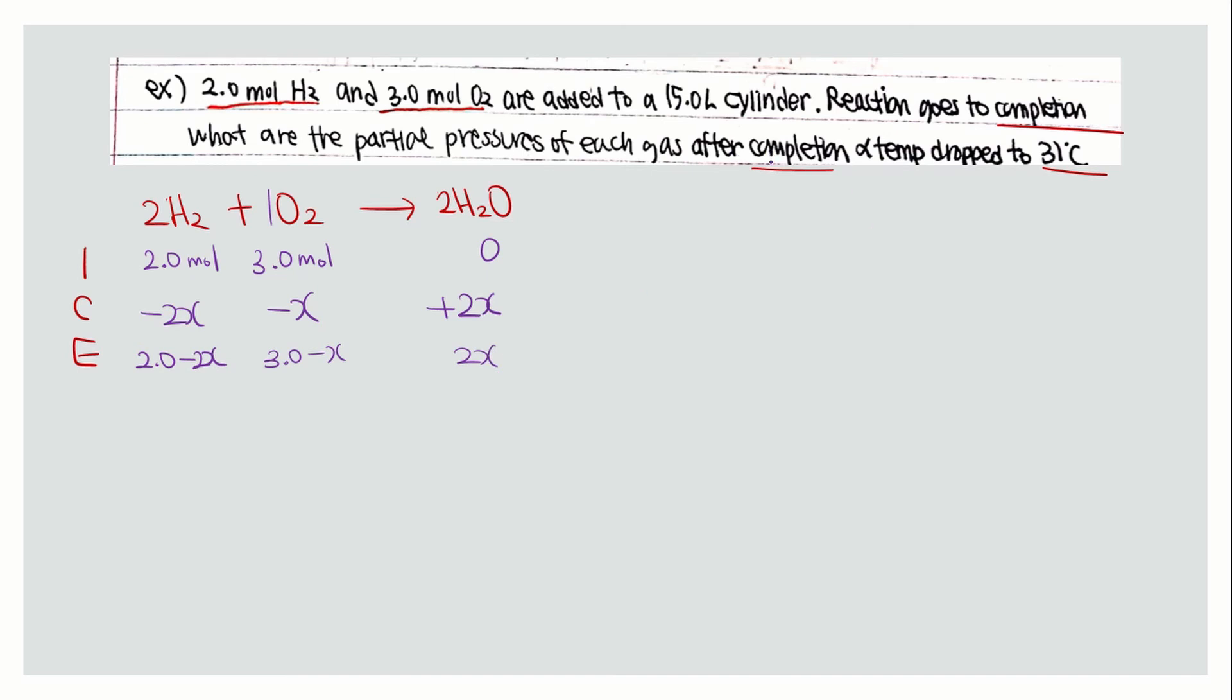The reaction goes to completion, which means the reaction will proceed until the limiting reactant is depleted. To find the limiting reactant, look at the coefficient and the initial amounts. The limiting reactant is hydrogen because it has a smaller initial amount and decreases at a faster rate due to the coefficient of 2.